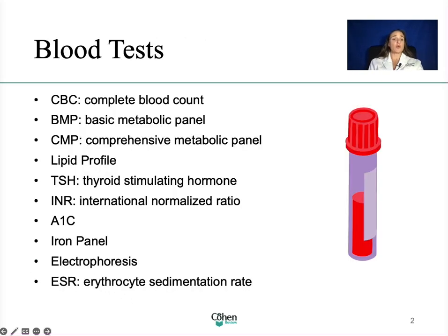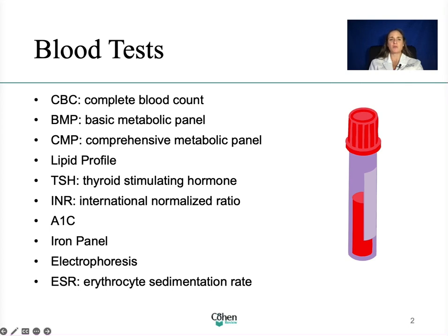I am going to go over the CBC or complete blood count, the basic metabolic panel, comprehensive metabolic panel, lipid profile, thyroid stimulating hormone, INR or international normalized ratio, the A1C level, iron panel, electrophoresis, and ESR or erythrocyte sedimentation rate. Let me make it clear — there are many other tests that you can order, but these are the basic ones, and for that reason I think it's important that we go over each one of them.